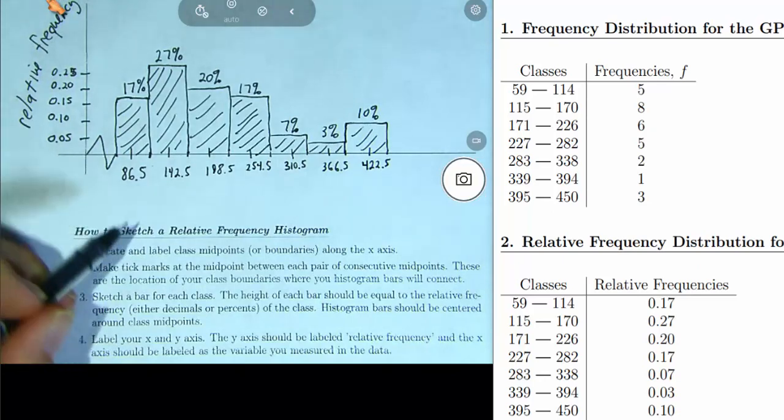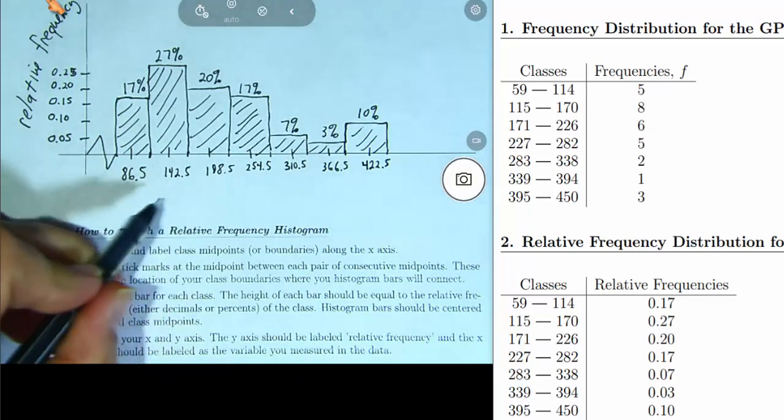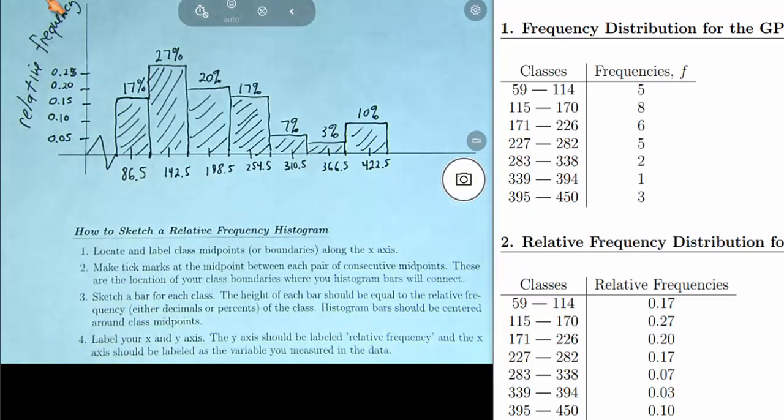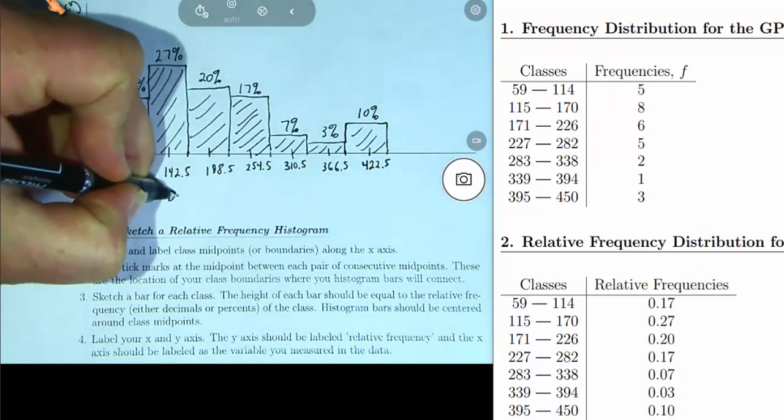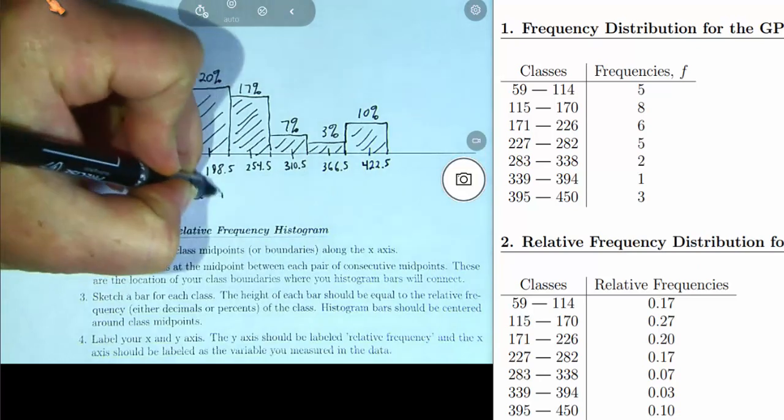And don't just label the X axis as midpoints, put the variable that you measured in the data. So this is GPS device prices in dollars.